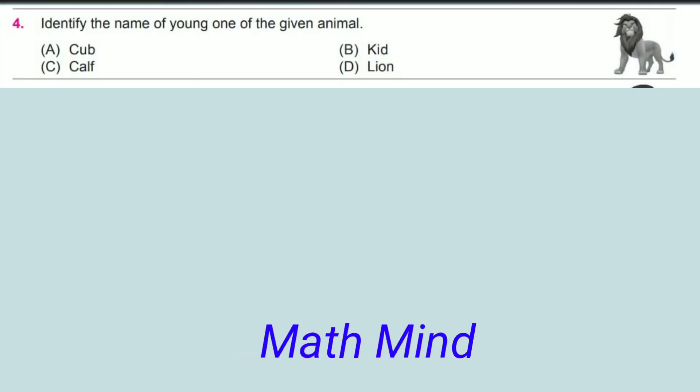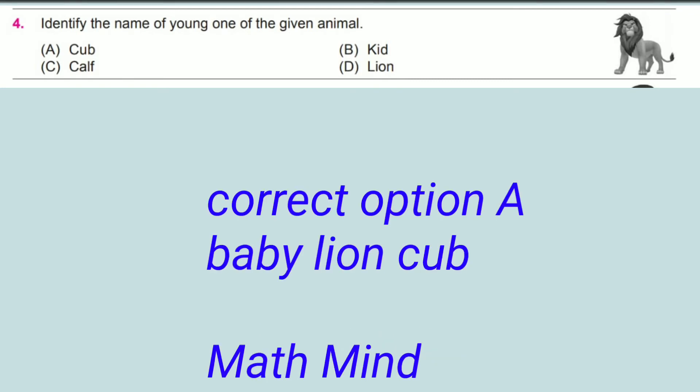Question number 4: Identify the name of young ones of the given animal. It is a lion. A lion's kid is called cub, option A. Option C, calf, is a baby cow. Hence, option A is correct.